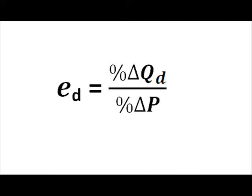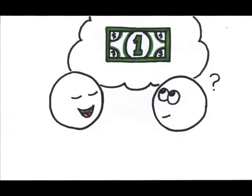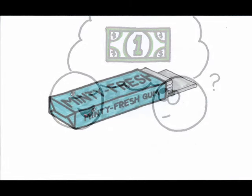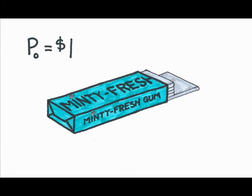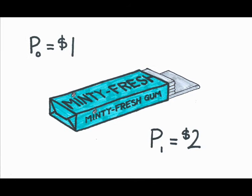Let me illustrate why. If I tell you that a product's price has gone up by $1, this would be the absolute change — but is this a big change or a small change? It depends. What's the product, and more to the point, what was the original price? Say we're talking about a pack of gum. Originally the price was $1, now it's $2. This represents an absolute change of $1, but it's actually a pretty big change — price doubled, or increased by 100%.